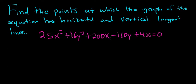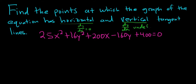Find the points at which the graph of the equation has horizontal and vertical tangent lines. We're going to use implicit differentiation to do this. The graph will have horizontal tangent lines whenever dy/dx is 0, and vertical tangent lines whenever dy/dx is undefined. The first thing we'll do is use implicit differentiation to find dy/dx.